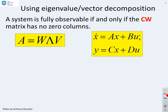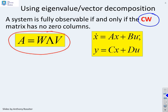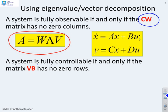Equivalently, we can look at observability and controllability by first doing an eigenvalue eigenvector decomposition. We take the matrix A and write it as the eigenvectors W times the diagonal matrix of eigenvalues lambda times the left eigenvectors V. We then construct the matrix C times W — the system is fully observable if and only if this matrix has no zero columns. Equivalently, we construct the matrix VB, and the system is fully controllable if and only if this matrix has no zero rows.